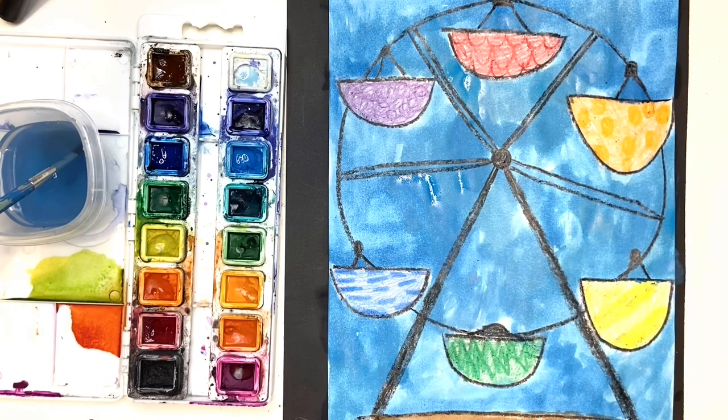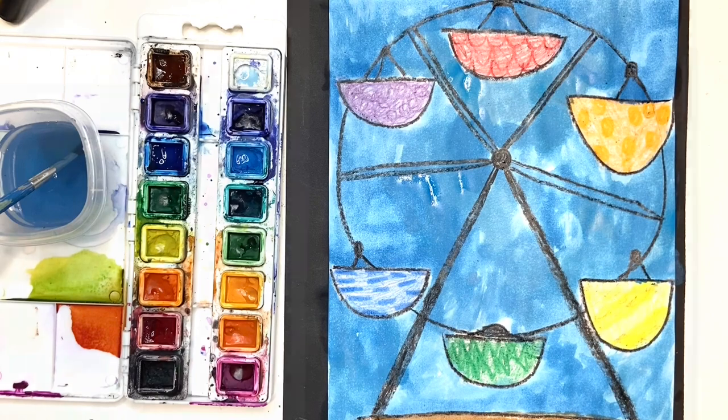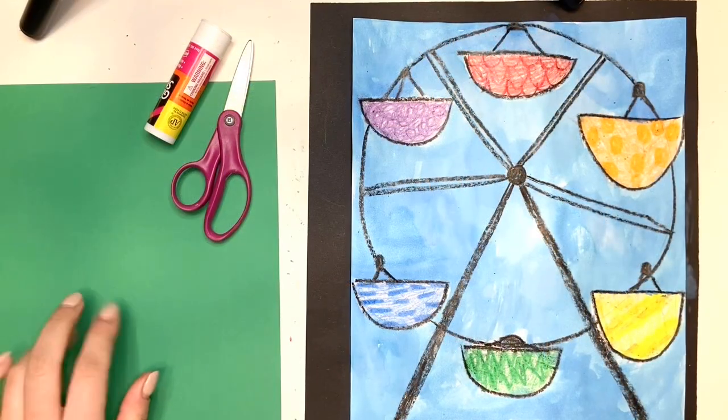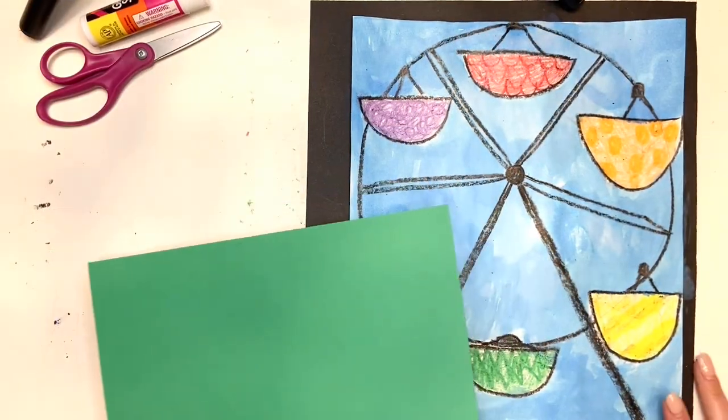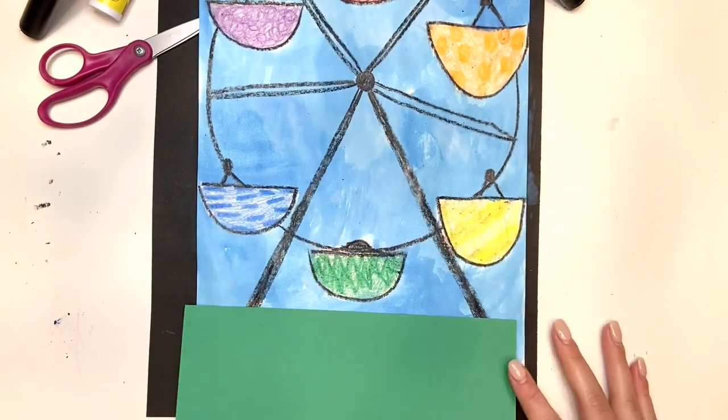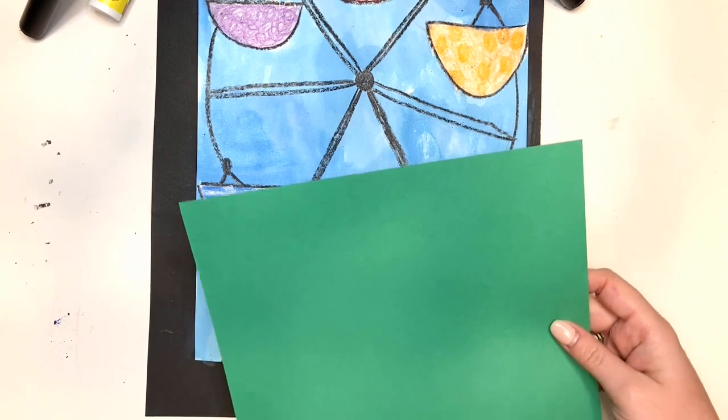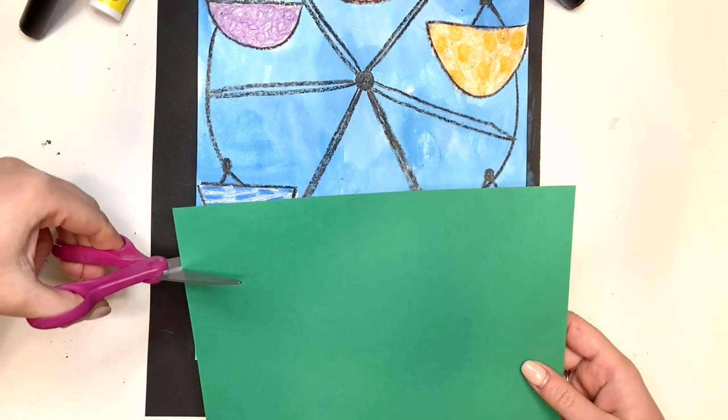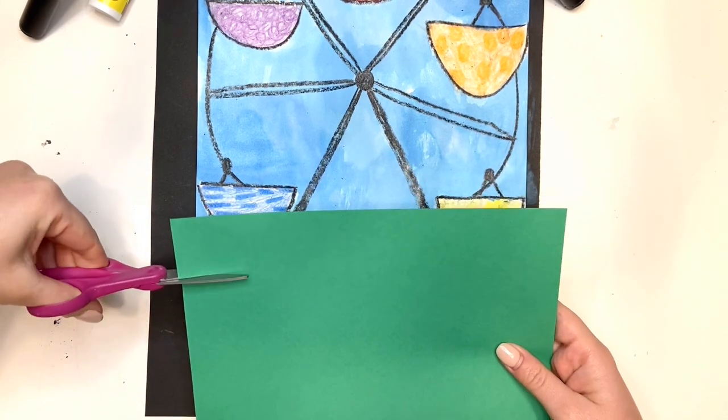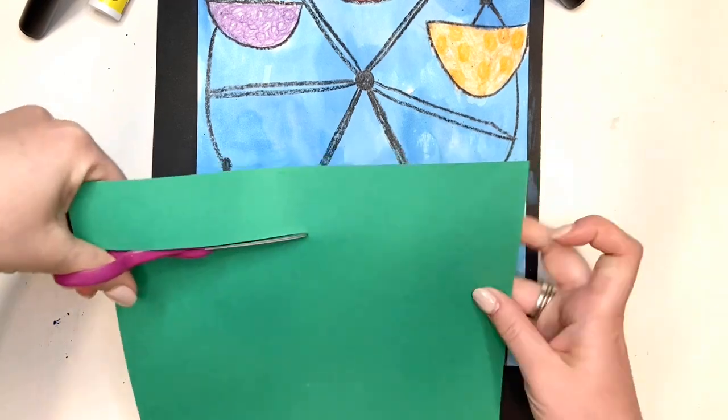Make sure your paper is dry before you move on to the last piece, which if you have the green paper, I'm going to add a little fringe of grass because why not? So I'm going to cut along the top of my paper so the sides that match up with the bottom.